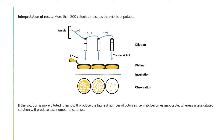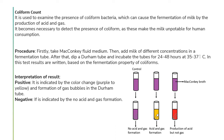The next test is coliform count. It is used to examine the presence of coliform bacteria. Coliform bacteria are present in the environment, such as in water and in the feces of warm-blooded animals and humans. They have the ability to cause fermentation of milk by production of acid and gas.